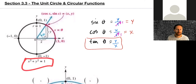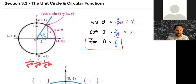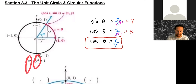By the way, this is the equation that gives us the unit circle. We took the circle equation, divided everything by r², to get cosine² plus sine² equals one — the Pythagorean identity we've dealt with.